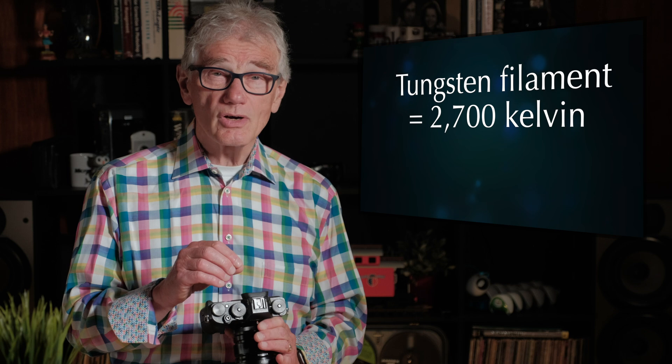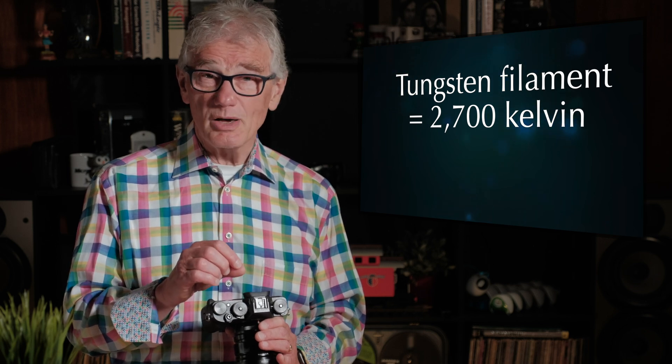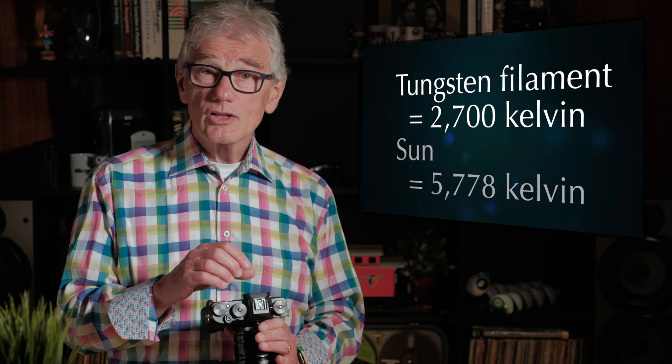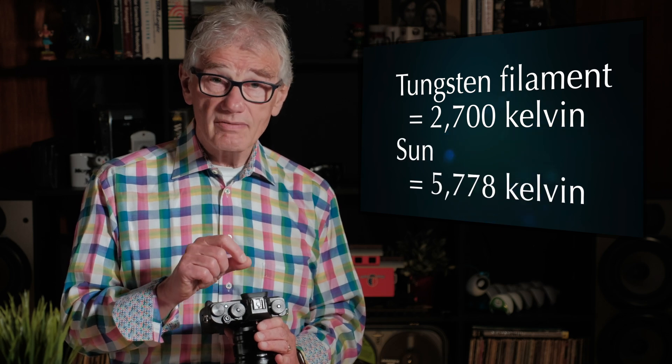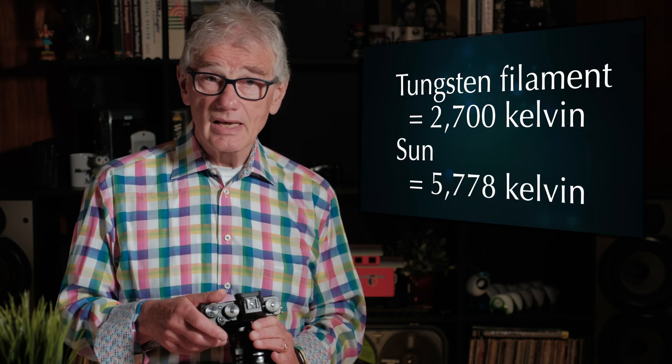The temperature of the tungsten filament in an incandescent light bulb is 2,700 Kelvin. The surface temperature of the sun is 5,778 Kelvin — I'm taking Wikipedia's word for those. That is also the color temperature when you're using those light sources. Unintuitively, cloudy conditions have higher color temperatures than bright sunlight. You can consult Google to find charts that provide the color temperature of various lighting situations.